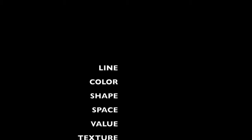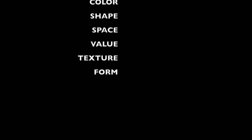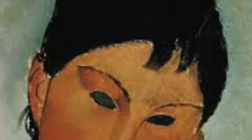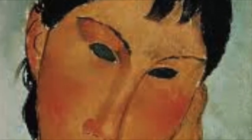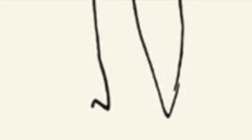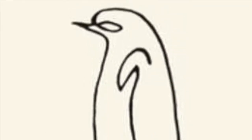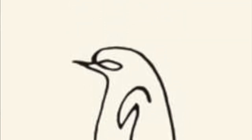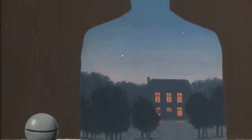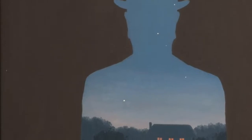There are seven elements of art: line, color, shape, space, value, texture, and form. Every artwork in the world has at least one of these elements. Sometimes artists create art that is all about one or more of the elements. Sometimes artists use the elements to express other ideas.